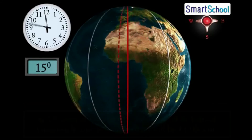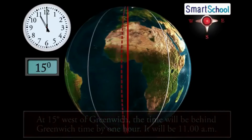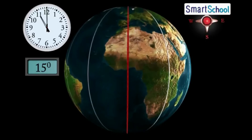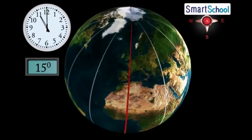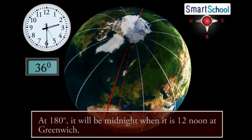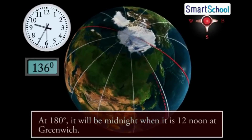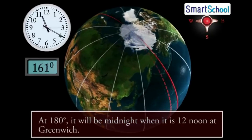But at 15 degrees west of Greenwich, the time will be behind Greenwich time by 1 hour, i.e. it will be 11 am. Similarly, at 180 degrees, it will be midnight when it is 12 noon at Greenwich.